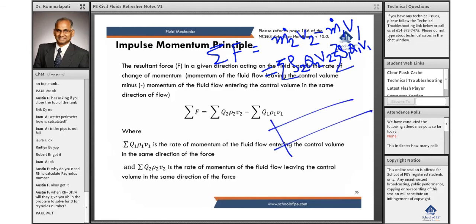We put them in sigma or summation just because if you have more than one way the fluid is entering the system, or if you have just a pipe like this, then you have just rho 2Q2V2 minus rho 1Q1V1. So this is what is called the impulse momentum principle.